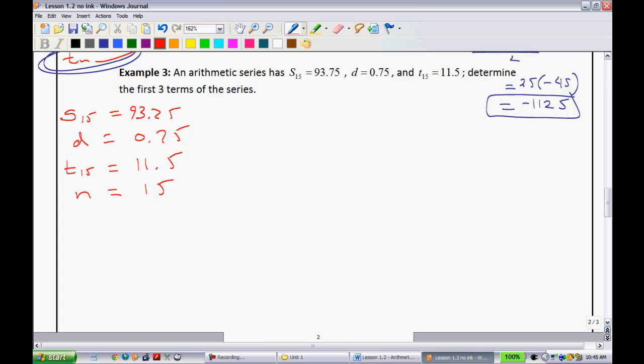So, they want you to determine the first three terms of the series. Well, since we know the common difference right here, if we could just find out the first term, or t sub 1, then we can find the next terms by simply just adding that .75 each time. So, t sub 1 is really what we're looking for. So, the equation that has all of that is the first equation. It's the s sub n is equal to n, all multiplied by our first term, plus our last term, tn, all divided by 2. And so, if you look, what we're going to do is we're going to try and work our way to figure out what that t1 is.